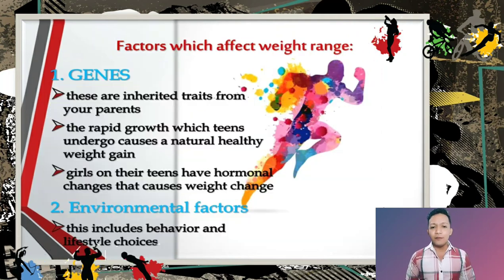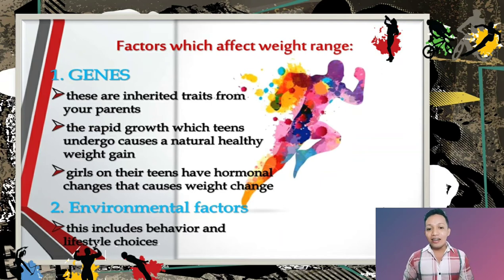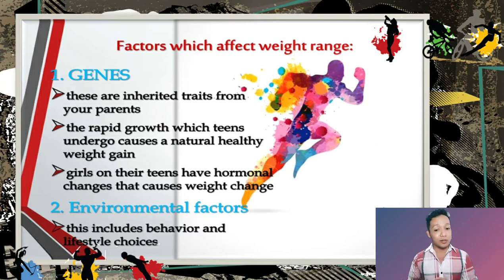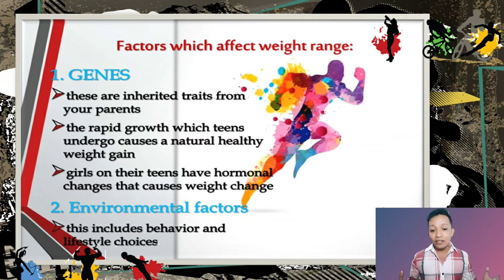Factors which affect weight range: Number one is genes — these are inherited traits from your parents that you cannot control. The rapid growth teens undergo causes natural healthy weight gain, and girls experience hormonal changes that cause weight change. Number two is environmental factors — this is something you can control, as it includes behavior and lifestyle choices, so be selective and decisive about what you acquire from those around you.